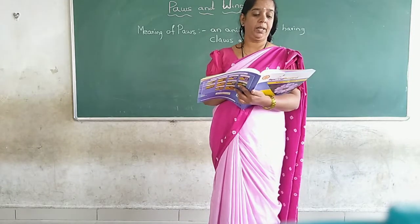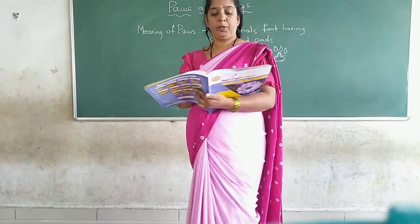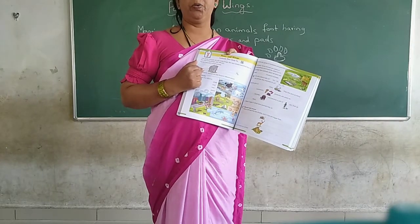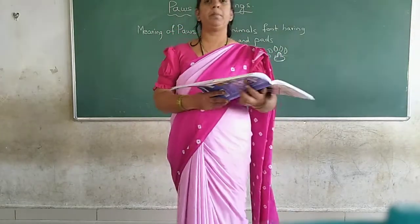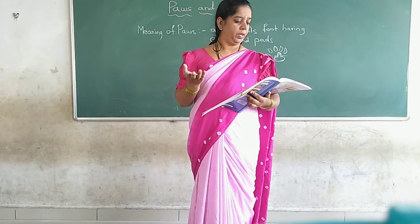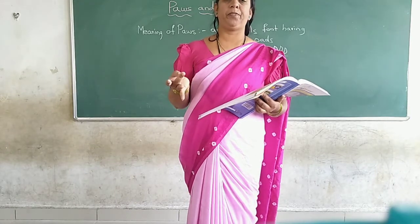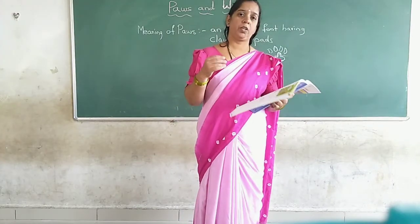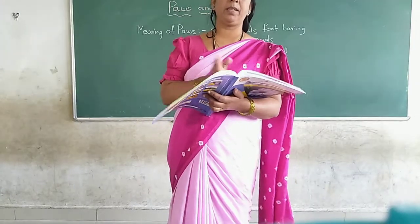You have a worksheet here. Name three big and three small animals. Write down three big animals you know and three small animals you know. For big animals you can write elephant, lion, tiger, etc. For small animals, you can write ant, spider, butterfly, housefly — these are very tiny small animals — or cat, dog, anything. Differentiate three big animals and three small animals.